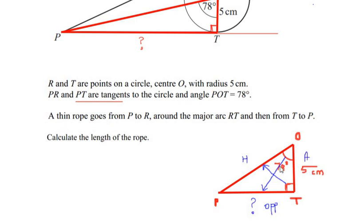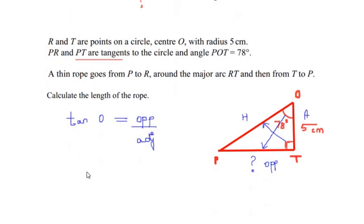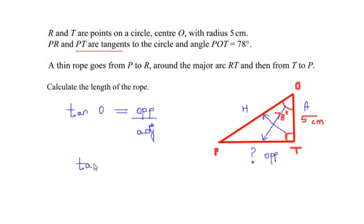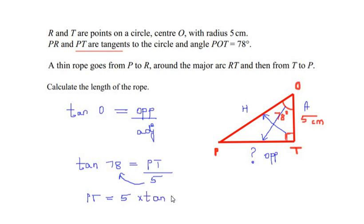The remaining side OT becomes the adjacent side. Since the opposite side PT is what we need and the adjacent side OT (5 cm) is given, we use the trigonometric ratio tan. So we write: tan(angle O) = opposite / adjacent, which gives tan(78°) = PT / 5. By cross multiplication, PT = 5 × tan(78°).